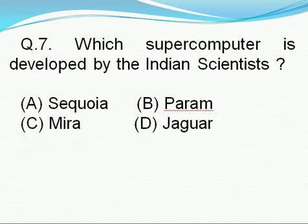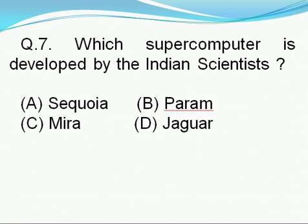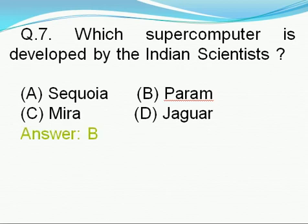Question number 7: Which supercomputer is developed by Indian scientists? Options include Sequoia, Param, Mira, and Jaguar. Right answer is B, i.e., Param. The Param supercomputer is developed by Indian scientists. Very important question.